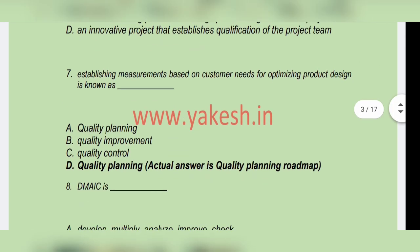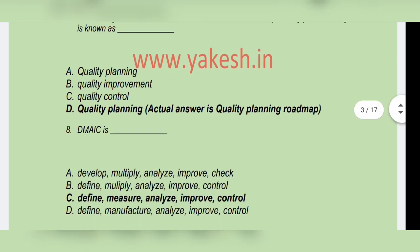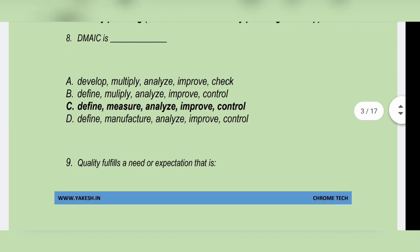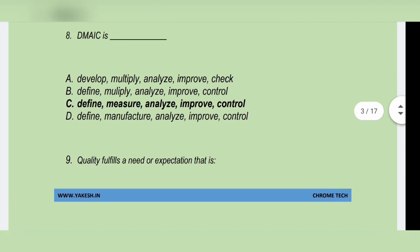Establishing measurement based on customer needs for optimizing a product is known as — Option D: Quality planning. The actual answer is quality planning roadmap. Next question: DMAIC stands for — Option C: Define, Measure, Analyze, Improve, Control. Option C is the correct answer.